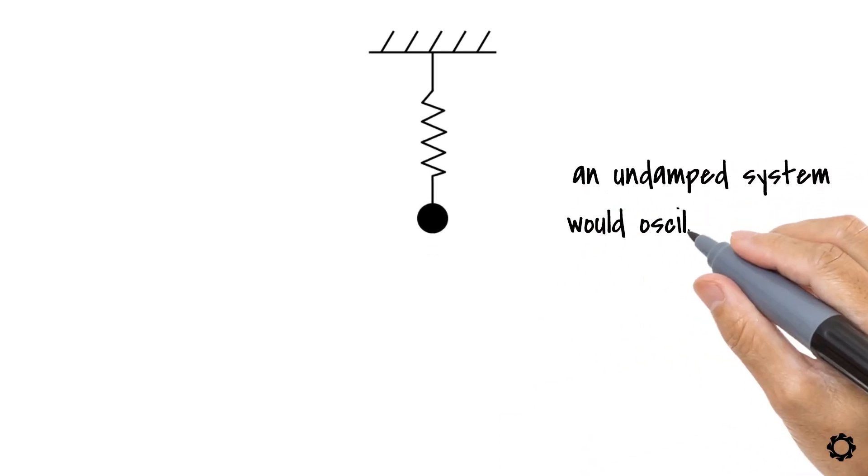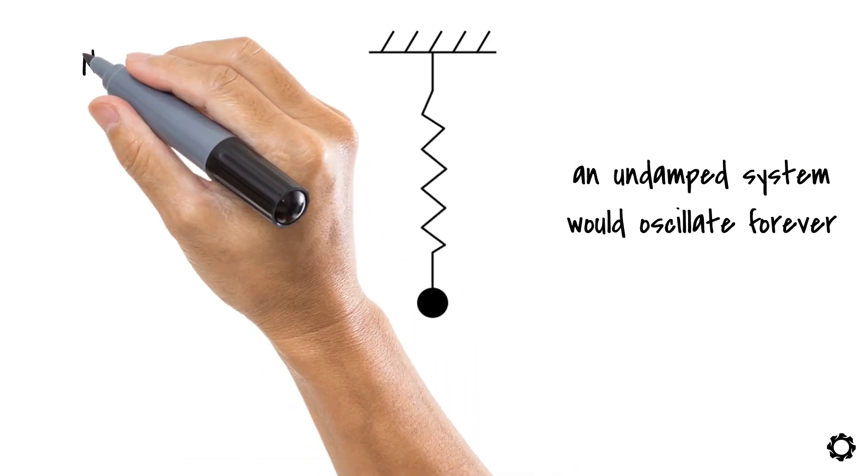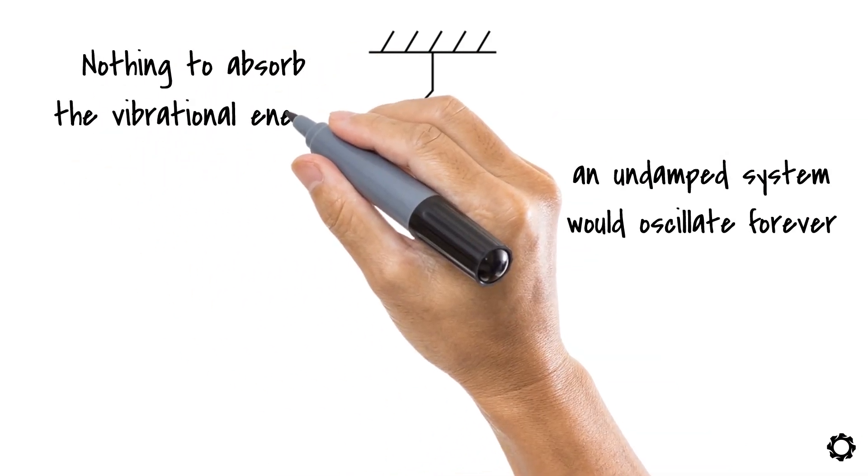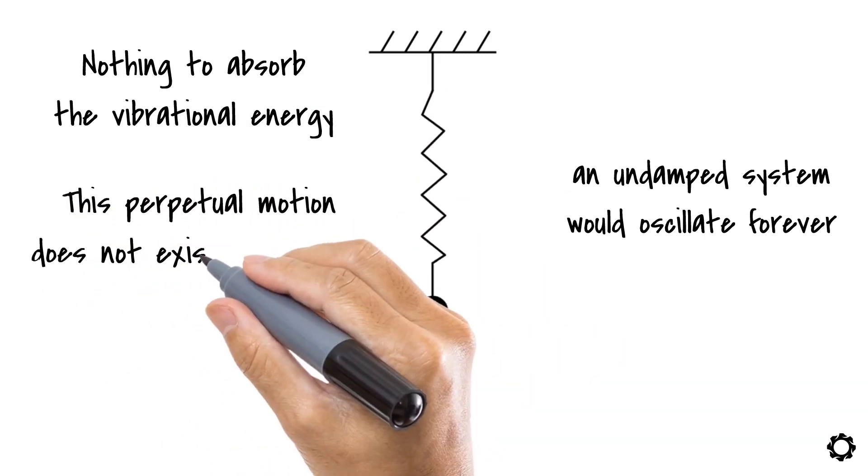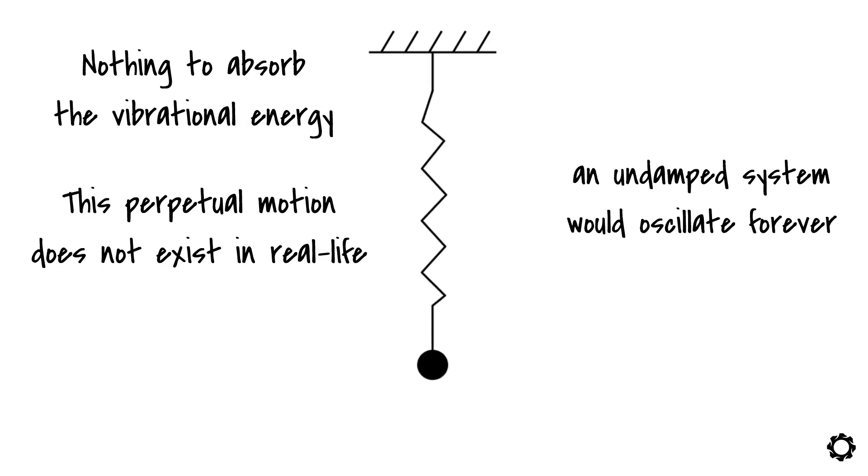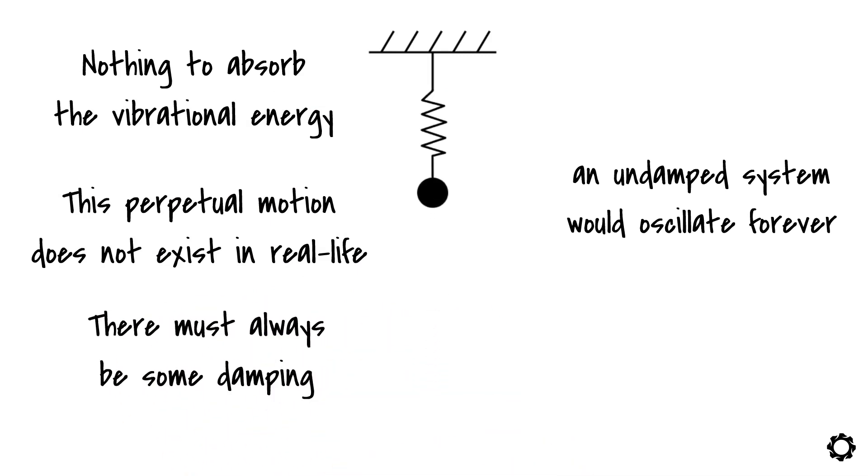If we had an undamped system, the system would oscillate forever. But why? Well, this would happen because we would not have anything to absorb the vibrational energy. But as we know, this perpetual motion does not exist in real life, from which we can conclude that there must always be some damping in the system absorbing this kinetic energy and transforming it to another form.